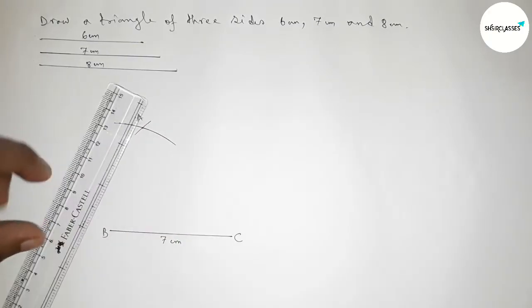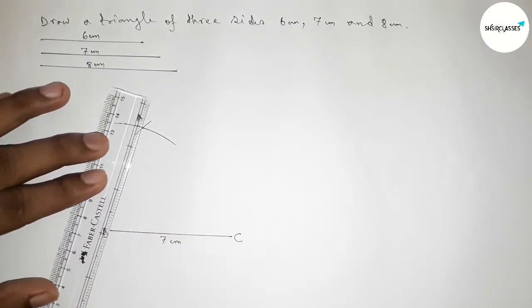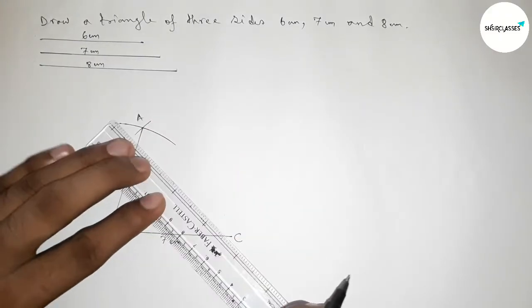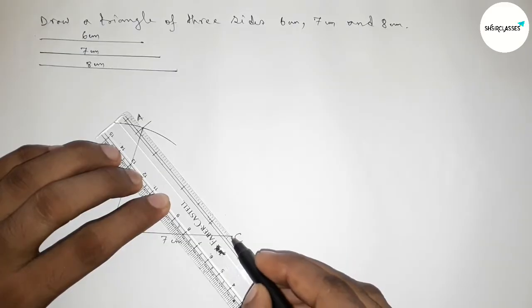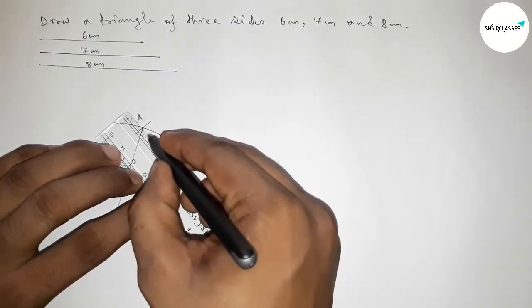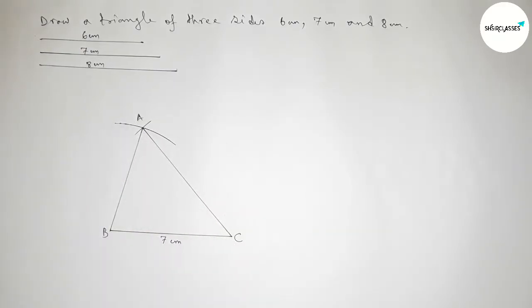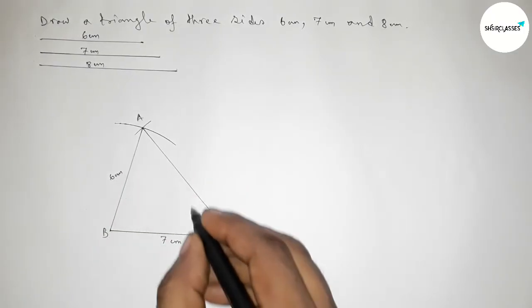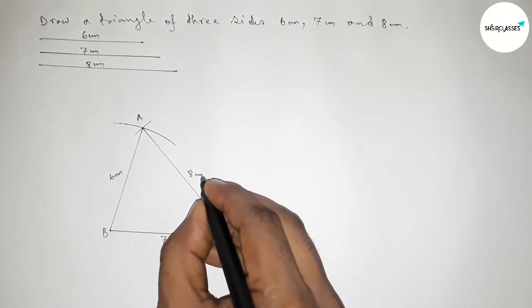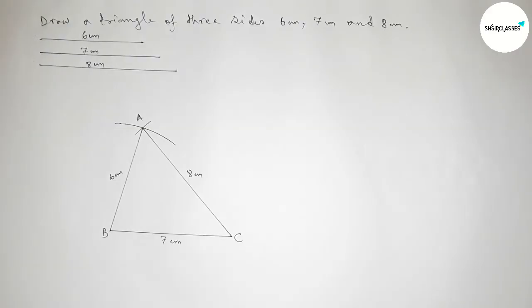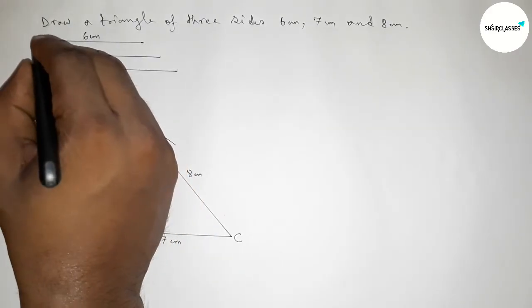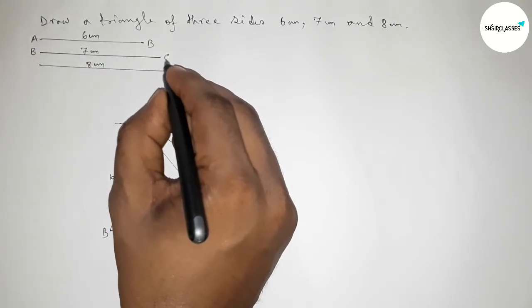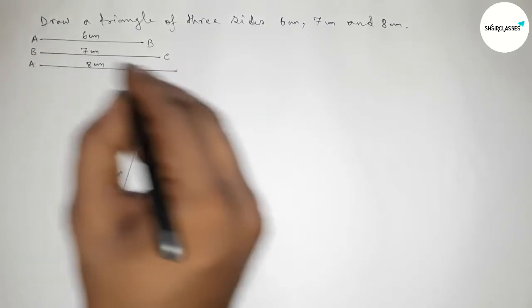Taking that intersection point as A. Now joining A to B to get side AB, then joining A to C to get side AC. The length of side AB equals 6 centimeter and AC equals 8 centimeter. This is AB line, this one BC line, and this one AC line.